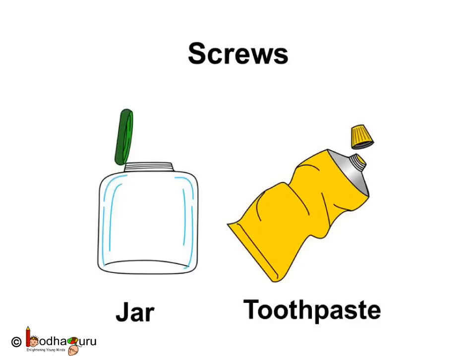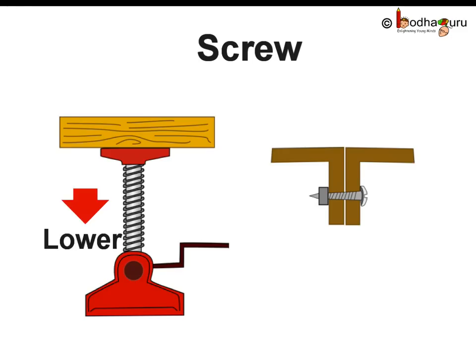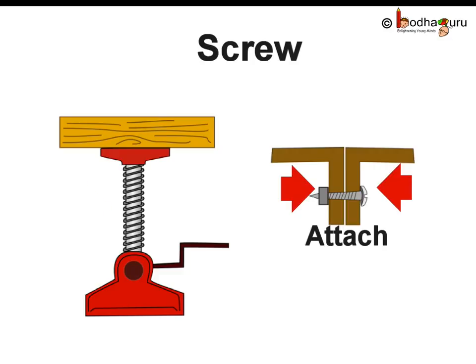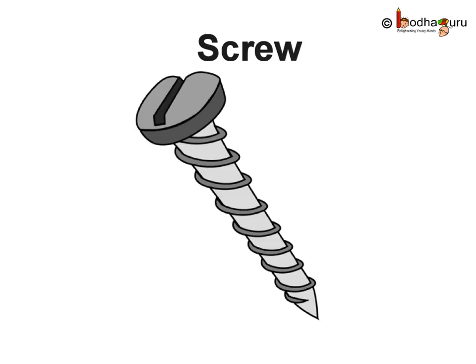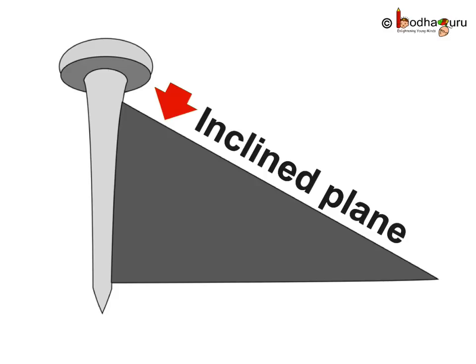When you open a jar or toothpaste tube, you rotate the cap or lid. You may have seen the small nail-like things used to hold these things. These are all a type of machine called a screw. Screws are used to lower and raise things, and also to hold objects together. A screw looks like a nail with grooves cut into it, and has a winding edge with threads.